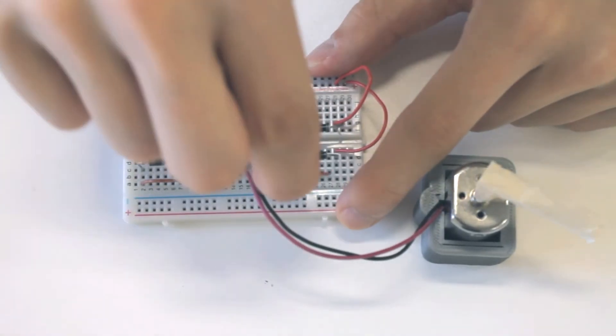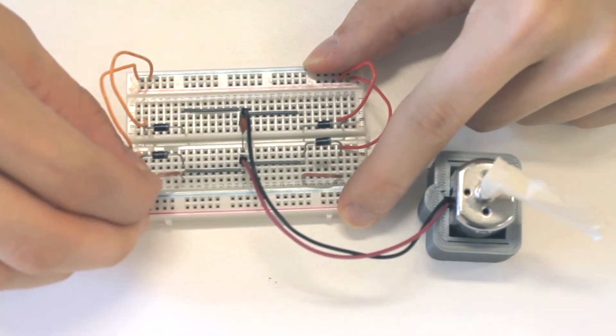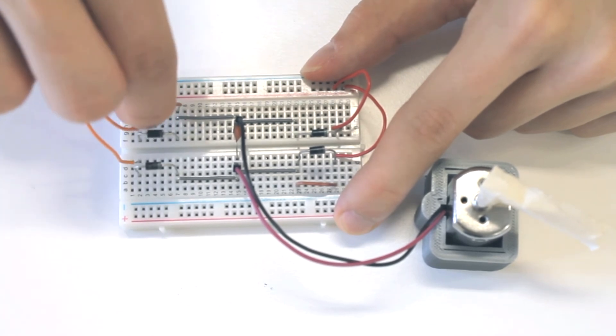Let's build our own H-Bridge circuit to control a DC motor. We will keep it simple and physically move the wires to show the functionality. One could use switches or transistors for the same purpose.